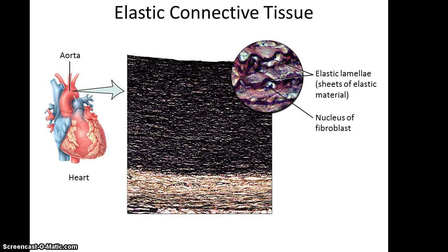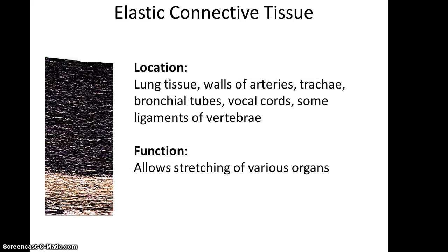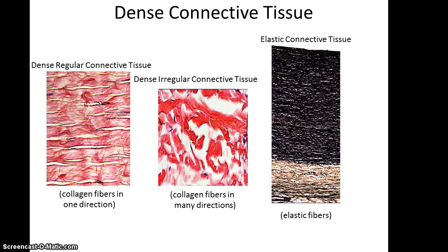Finally, there is elastic connective tissue, which looks very dense. Looking closely, you can see spaces where the fibroblasts are located. Elastic connective tissue is primarily found in tissues that stretch a great deal and need to return to their original state — examples include lung tissue, walls of arteries, the trachea, bronchial tubes, vocal cords, and some ligaments of the vertebrae. Its function is to allow the stretching of these organs. Dense regular has collagen fibers in one direction, dense irregular has collagen fibers in many directions, and elastic connective tissue is composed primarily of elastic fibers.